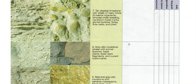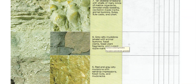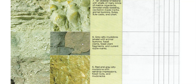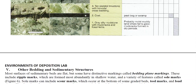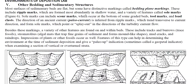Sea level is clearly fluctuating here. Try to figure out where there are transgressions and regressions — going from the gray silty mudstone into the marine environment is a transgression, sea level rising. But going from the marine environment to the evaporating bay and then land is definitely a regression. So we can document that change in sea level.